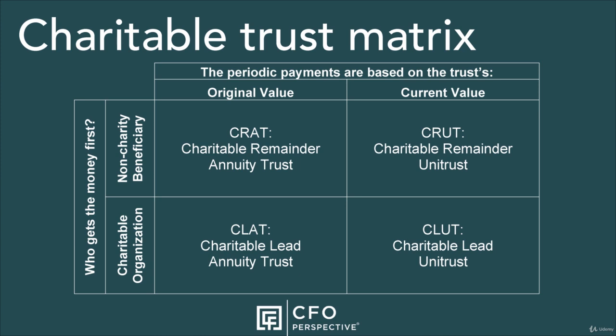Charitable Lead Trusts — CLATs and CLUTs. Now the beneficiaries switch order from the CRAT and CRUT. In charitable lead trusts, the charities receive a series of payments and the non-charity beneficiary receives whatever's left. These are complicated — why would anyone want to set one of these up? They give the donor an immediate large tax deduction and reduction of their estate for estate taxes. At the same time, these funds are kept secure in the trust to provide for two types of beneficiaries the donor cares deeply about: their family and charitable organizations they support. These trusts are usually used by wealthier donors.